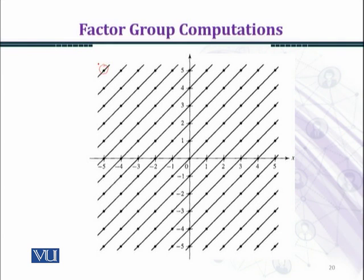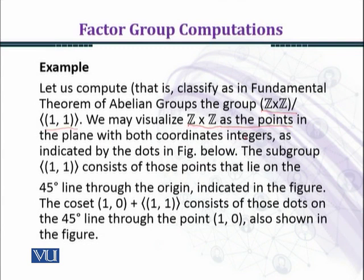For instance, consider this dot here: the coordinates are minus five and five — first coordinate minus five, second coordinate five. Similarly this dot has coordinates minus two and two. You can pick any dot; each contains integral first and second coordinates, such as first coordinate four and second coordinate minus three.